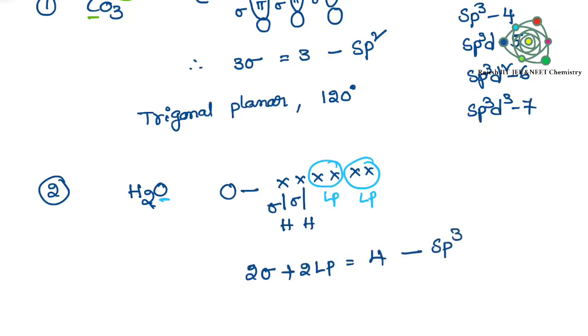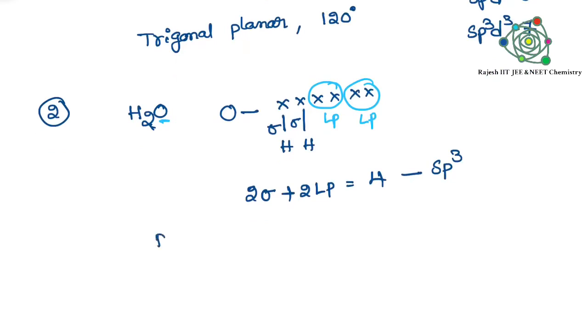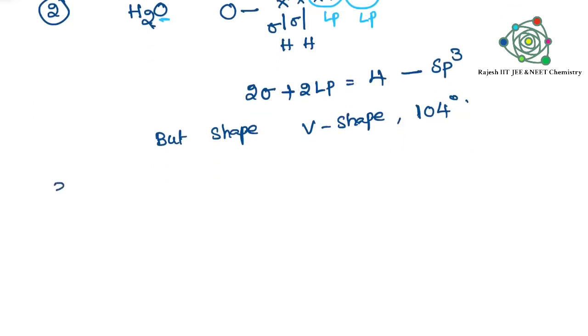In the above example no lone pairs, but here lone pairs are there. Two sigma bonds plus two lone pairs - lone pairs also we need to count. That means four, sp³. Shape is what? Lone pairs are there. Whenever lone pairs enter, shape will be changed according to the VSEPR theory - valence shell electron pair repulsion theory. That is why it is a V-shape and bond angle is 104 degrees.